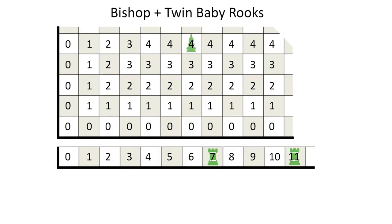Next, consider the sum of the bishop plus the twin baby rooks. It turns out that the numbers of the locations on each twin baby rook matter less than the number of empty squares between them. That number of empty intervening squares between the twins is their Grundy number.